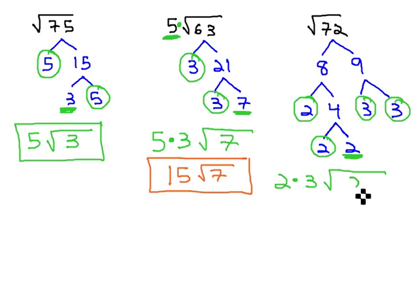All that's left inside is a 2. So for our final answer, 2 times 3 is 6, times the square root of 2 is our simplified version of the square root of 72.